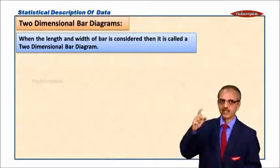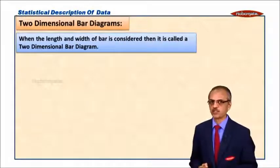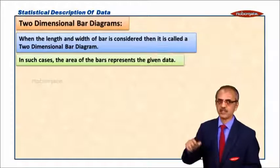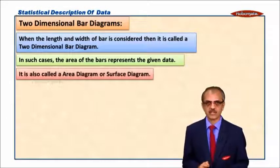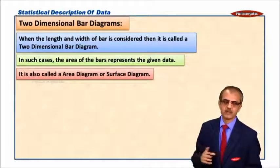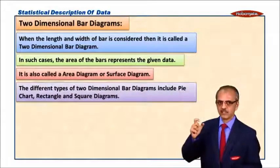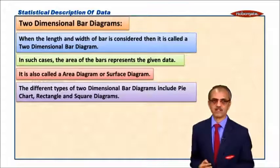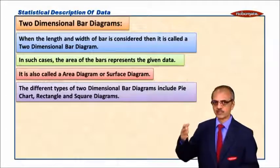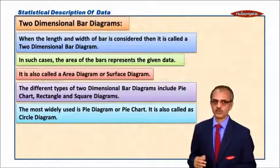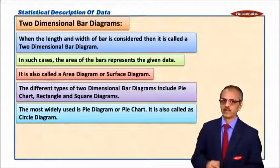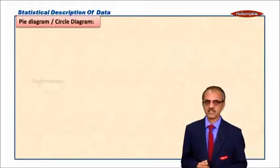Obviously, both length and width of the bar are important for the two-dimensional bar diagram. In such case the area of the bars represents the given data. It is also called area diagram or surface diagram. The different types of two-dimensional bar diagrams include pie charts, rectangles, squares, and diagrams.